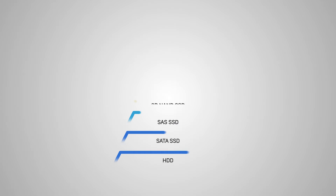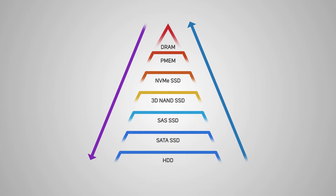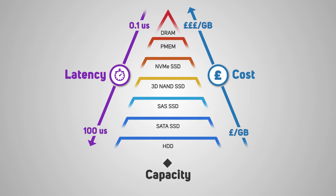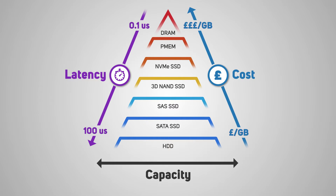As you can see from this diagram, PMEM has similar latencies to DRAM, but the width of the pyramid also represents capacity, meaning that PMEM can deliver much greater addressable system memory than when using DRAM alone. As you can also see, it's less expensive than DRAM, so it's more cost-effective when scaling large memory within servers.